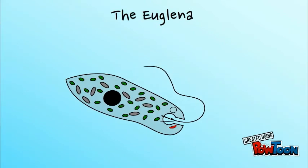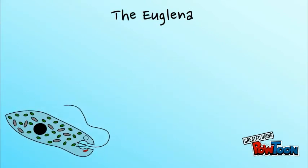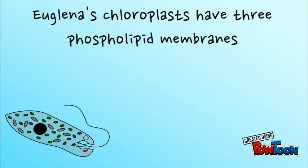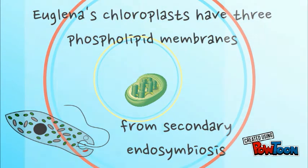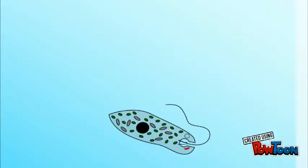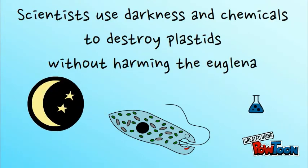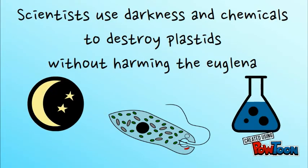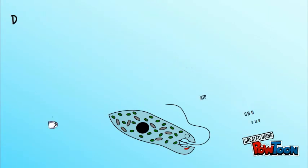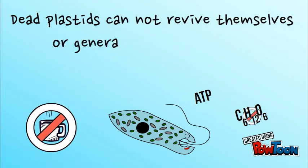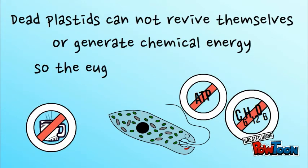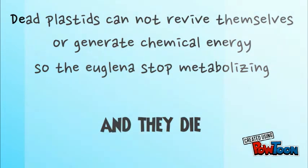The euglena's chloroplasts have three phospholipid membranes from secondary endosymbiosis. Scientists use darkness and chemicals to destroy plastids without harming the euglena. Dead plastids cannot revive themselves or generate chemical energy, so the euglena stops metabolizing and they die.